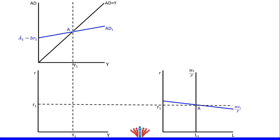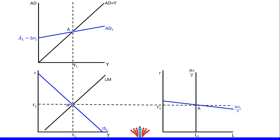In the IS-LM model, R1 and Y1 is the equilibrium point, which we will label as A. Then we will draw the downward IS curve and the upward LM curve to intersect at equilibrium point A. Now the three markets are at equilibrium — the goods market at point A, the money market at point A, and the IS-LM model at point A.